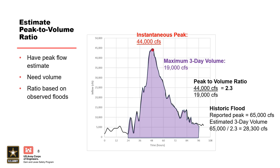Historic flood data are typically reported and documented as peak instantaneous flow estimates. In order to use the historic information, we need to estimate the corresponding volume for the critical duration. A common way to do this is to estimate a peak-to-volume ratio based on observed hydrographs. For example, with a watershed with a critical duration of three days, if an observed hydrograph has an instantaneous peak of 44,000 CFS and a maximum three-day average volume of 19,000 CFS, the peak-to-volume ratio would be 2.3. This should typically be done for several observed hydrographs. Once we estimate a peak-to-volume ratio, it can be applied to other historic flood events — for instance, a historic peak of 65,000 CFS with a ratio of 2.3 yields a three-day volume estimate of 28,300 CFS.